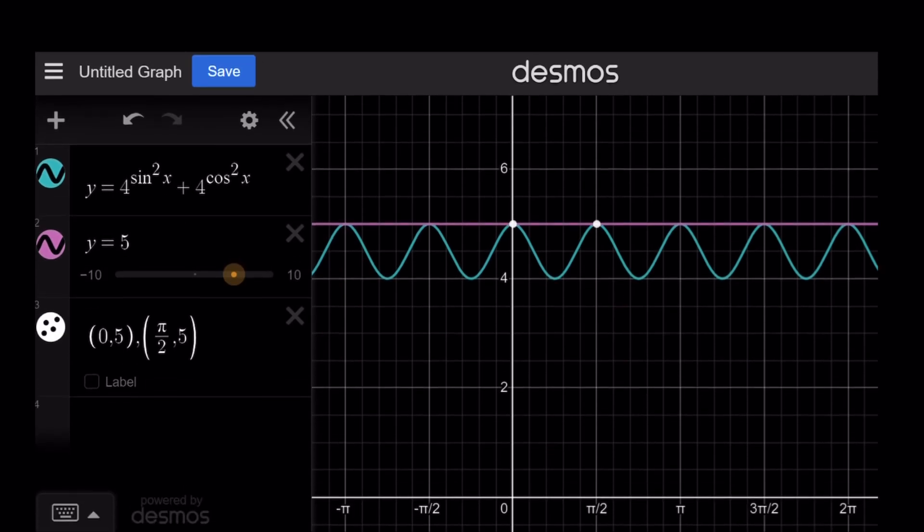Here's the graph of y equals 4 to the power sine squared x plus 4 to the power cosine squared x. That intersects y equals 5 at several points, obviously infinitely many, two of which I showed here, 0 and pi over 2. And then you were going to have pi, obviously, and then the 3 pi over 2. Because remember, it was 0 plus multiples of pi. And notice also that the maximum value for this function is 5. And you can also prove that.